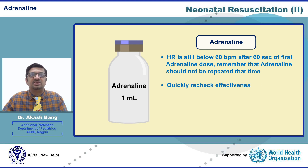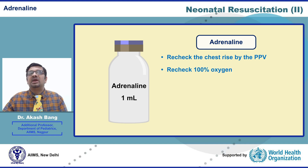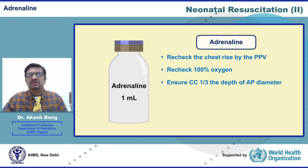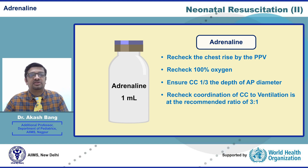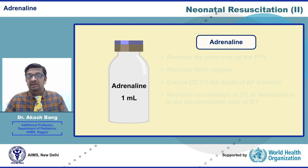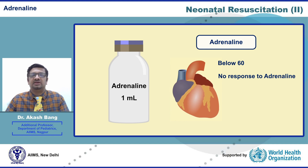Recheck the chest rise by positive pressure ventilation, verify 100% oxygen is being delivered, ensure chest compression is being given to one-third the depth of the AP diameter, and recheck that coordination of chest compression to ventilation is at the recommended 3-to-1 ratio. If all these are in order and the heart rate is still below 60, it means there is no response to adrenaline.